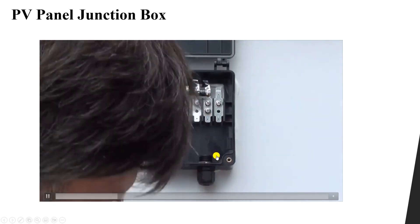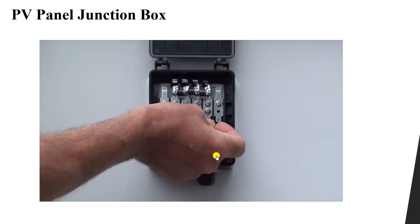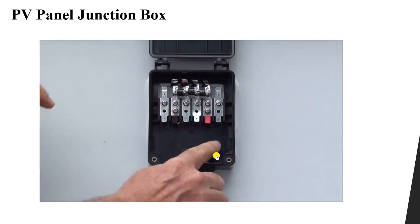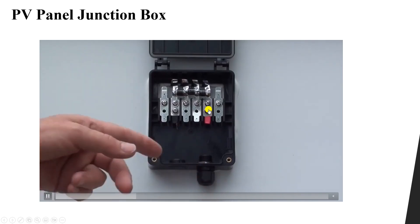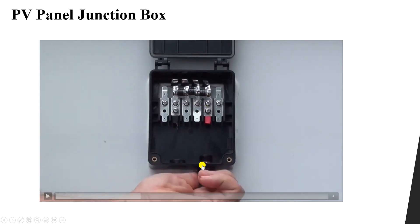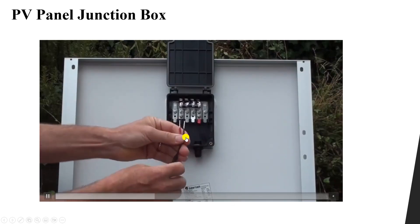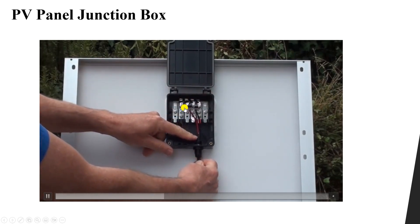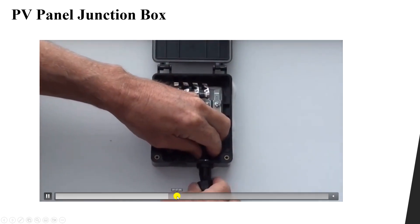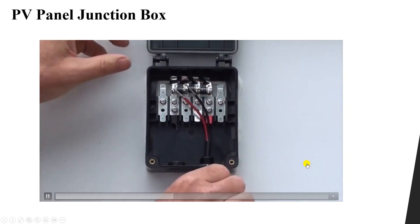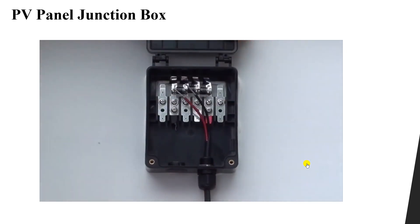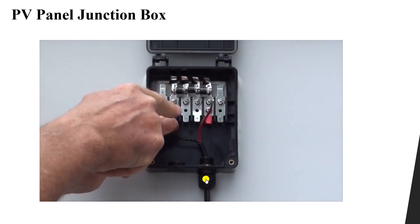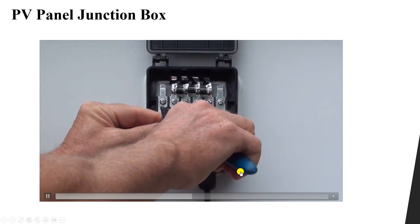Once we identify positive and negative, we add indicators to mark them. Then we remove the probes and add our wires — connecting the red wire to the positive terminal and the black wire to the negative terminal.